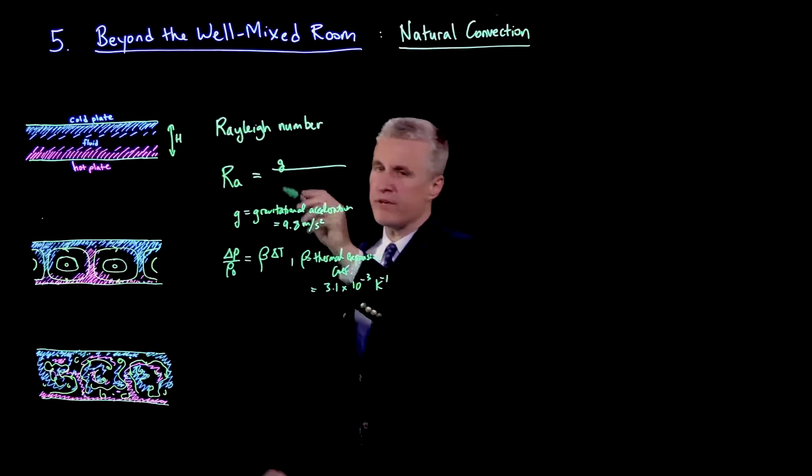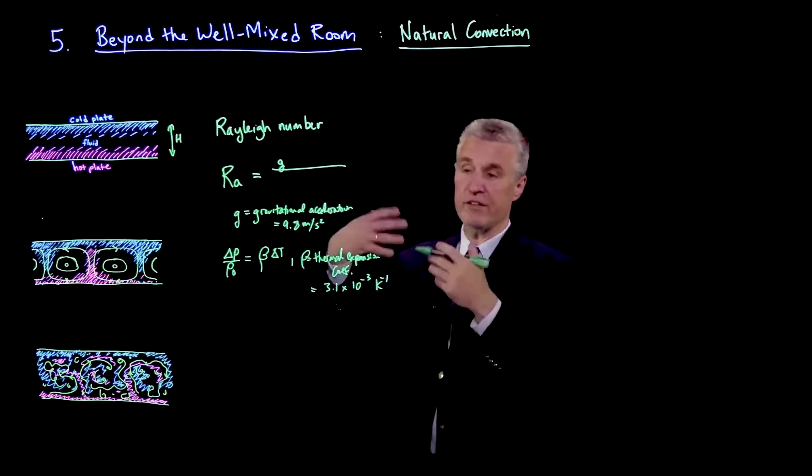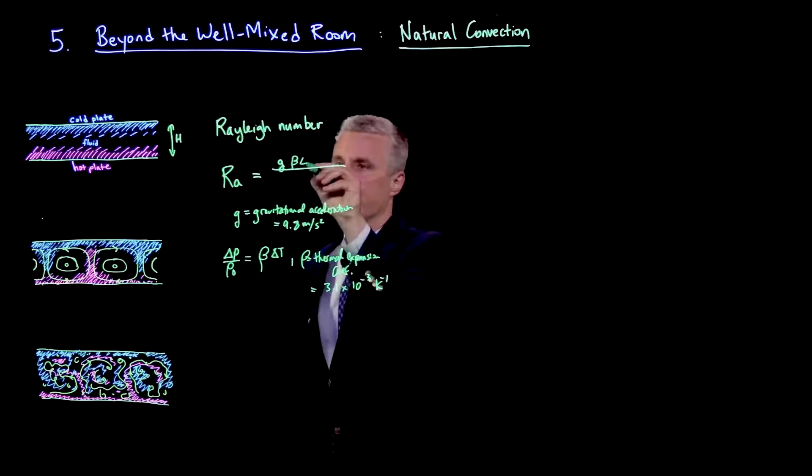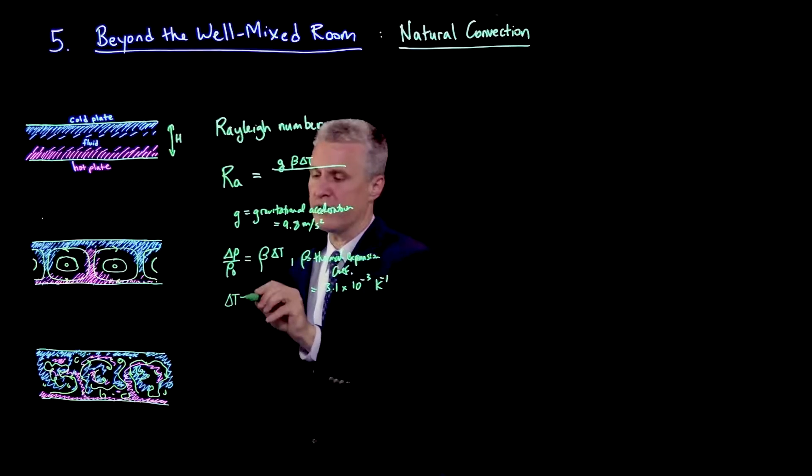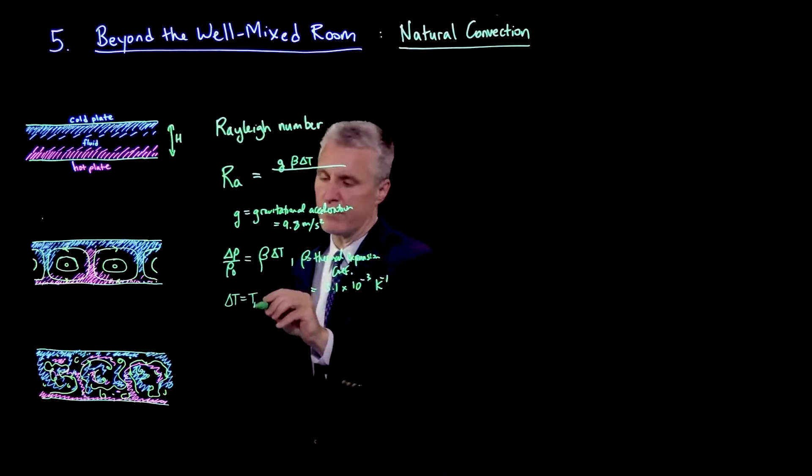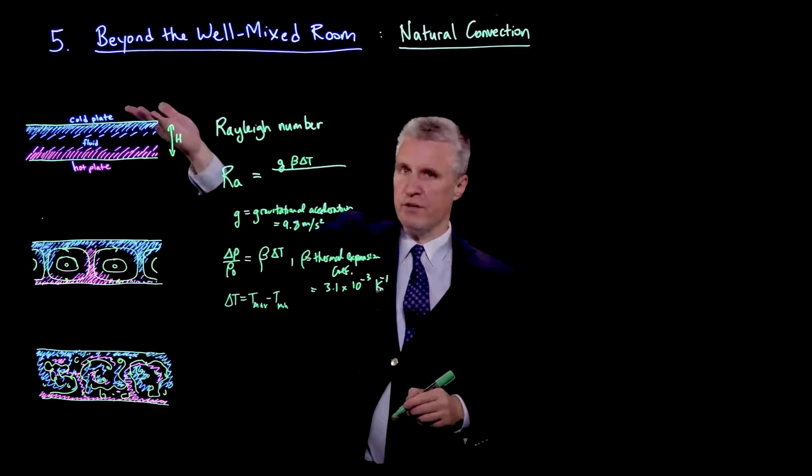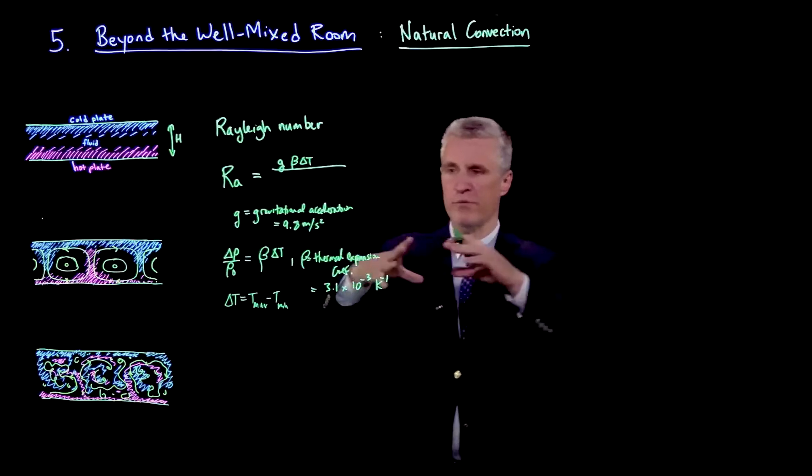We have gravity times the change in density - that's the buoyancy force per volume. And so we can write that as beta delta t, where delta t is t maximum minus t minimum. The example we're going to consider is a cold plate above a hot plate with a fluid in between.